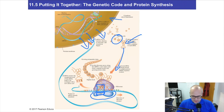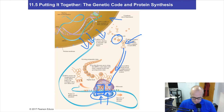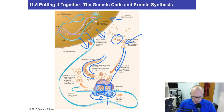A second tRNA will come in beside it on the next codon over — so we have one codon here and another codon right here. Now there are two tRNAs beside each other. Notice how we have a growing polypeptide chain. This ribosome has been working for a little while, and now this amino acid is going to be attached to that amino acid because they're in close proximity — they slam together to make a peptide bond.